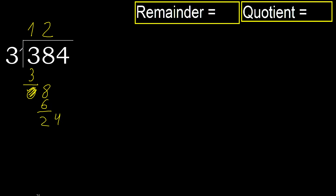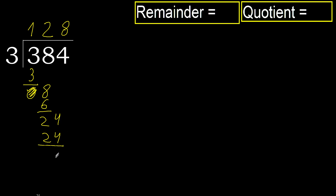24. 3 multiplied by 8 is 24 — 24 is not greater. Ok, subtract. 24 minus 24 is 0. Next.